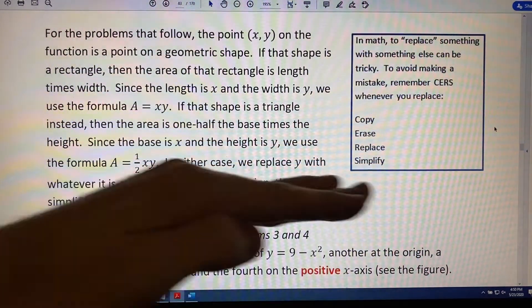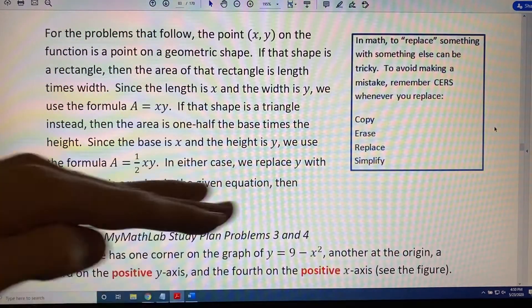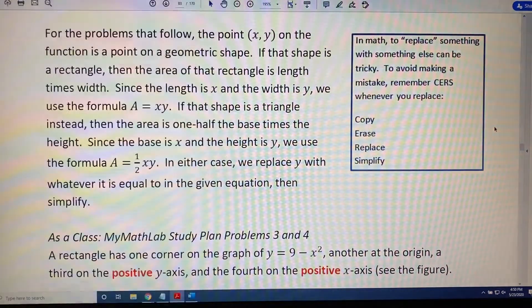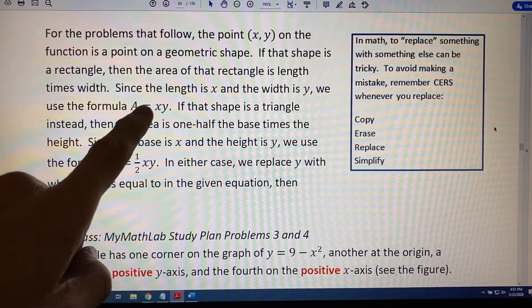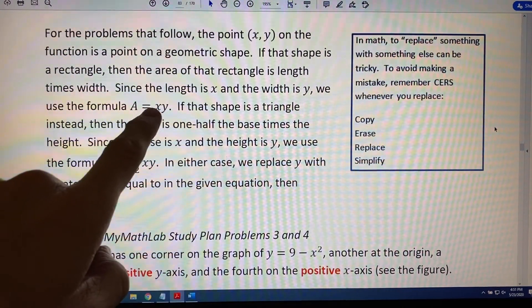And since length is x, a horizontal measurement, and width is y, a vertical measurement, we will use the formula A equals length times width, A equals x times y.